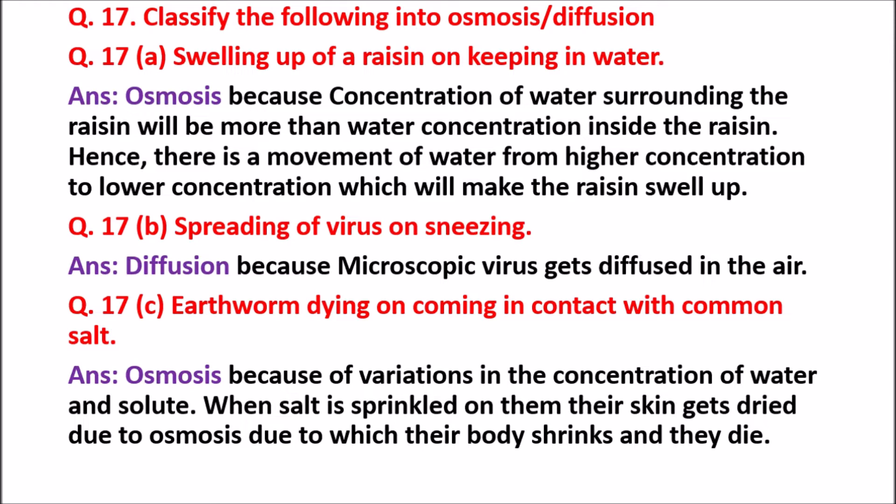Question 17C: Earthworm dying on coming in contact with common salt. That is Osmosis. Because of variation in the concentration of water and solute — when salt is sprinkled on them, their skin gets dried due to osmosis, which causes their body to shrink and they die.